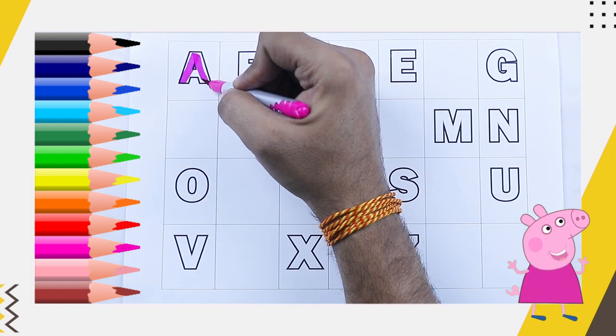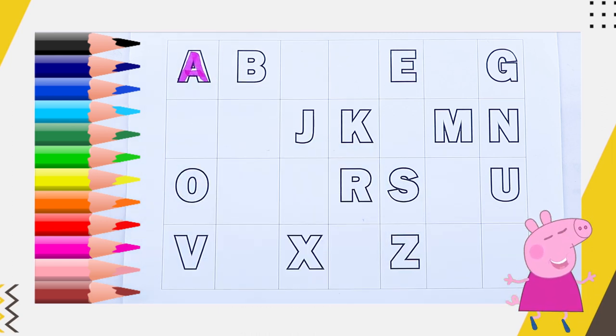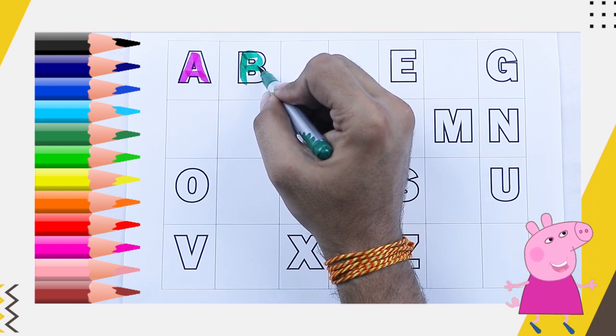Capital A, airport, apple. Green color. Capital B, B for ball.